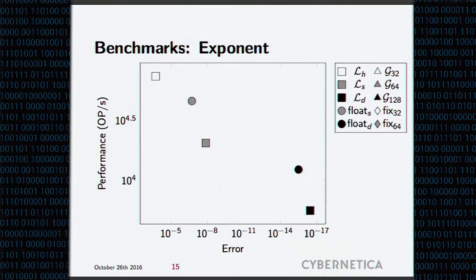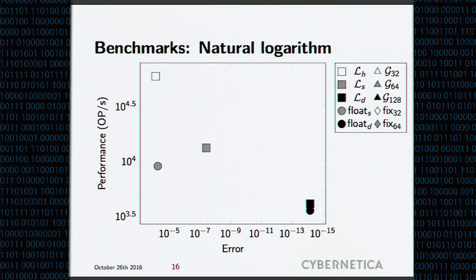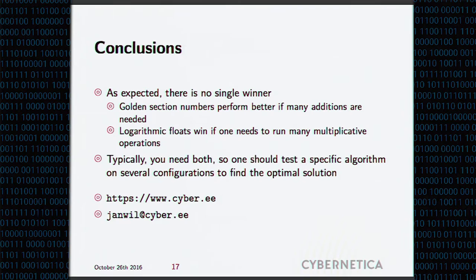Exponents and logarithms, we also implemented, but only for the case of floating point numbers and logarithmic numbers. It didn't even make sense to try that out in case of fixed point-like numbers. Computing exponent overflows so fast that it doesn't really give you anything. And the last benchmark is a natural logarithm. We see that here the logarithmic floating point numbers actually outperform the real floating point numbers.